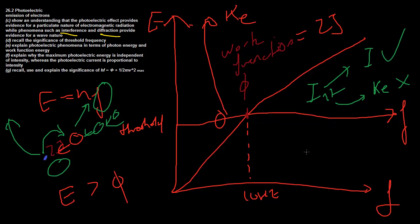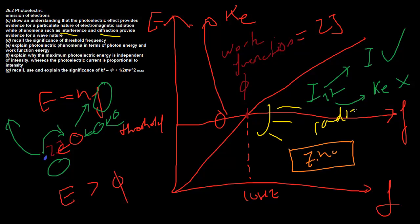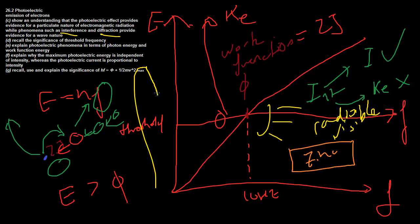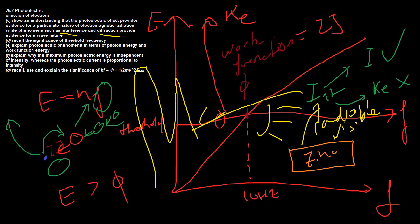Say you take a slab of zinc and you start shining a light on it — first low frequency light, like radio or even visible light from a light bulb. You'll notice no current is produced at all, even if you make it a 10,000 watt light bulb — you'll still get zero electrons emitted. But as soon as you turn up the frequency, there will be zero current all the way up to the threshold frequency, and then suddenly your current will spike. When you then change intensity, the current will go up and down. Changing frequency beyond that point doesn't change the current — it changes the kinetic energy. So intensity governs the current, and frequency governs the kinetic energy of the electrons.